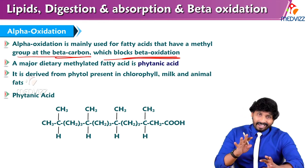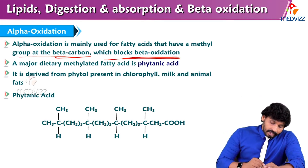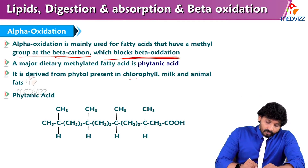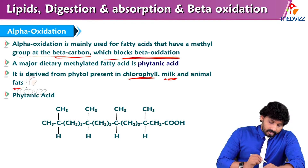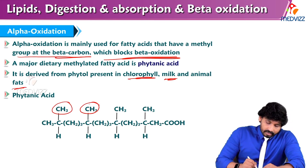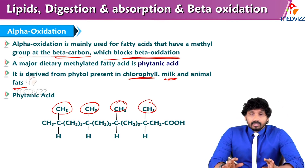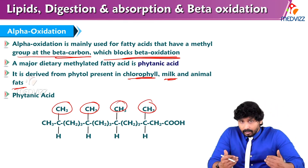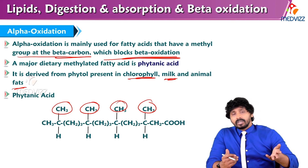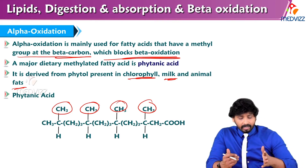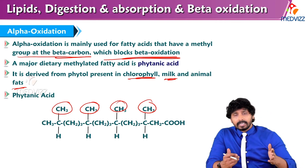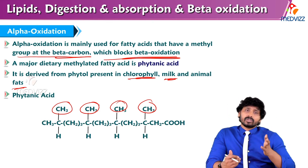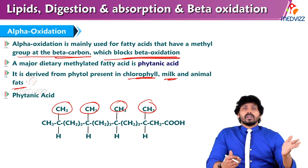Looking at phytanic acid, the methyl group is attached at the beta carbon — this is a blockage for beta oxidation. If the methyl group were not there, beta oxidation would take place. But because the methyl group is attached at the beta carbon, it blocks beta oxidation. That's why cells have to go towards alpha oxidation, where cleavage takes place at the alpha carbon instead.